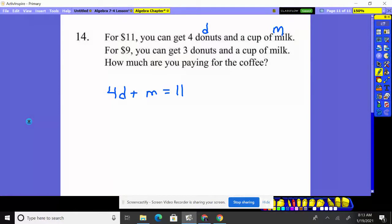The other equation says for nine bucks, you get three donuts. So three donuts plus a cup of milk, this time it's only $9.